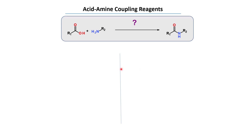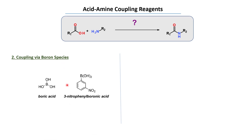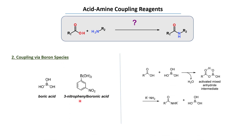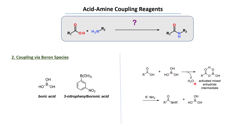We can also activate this acid using boron species like boric acid and 3-nitrophenylboronic acid. In this case, the acid is activated with boric acid to get a mixed anhydride, which is further treated with the amine to give the amide compound.